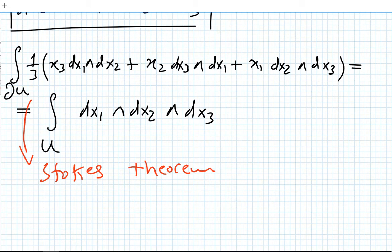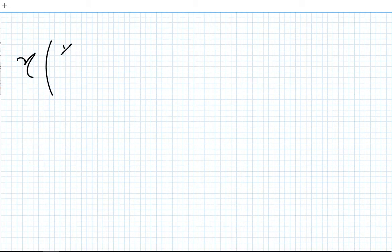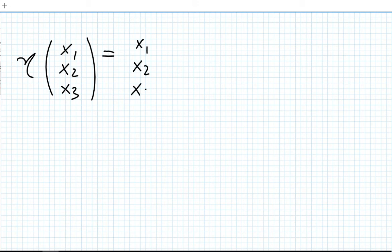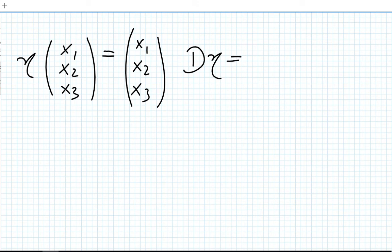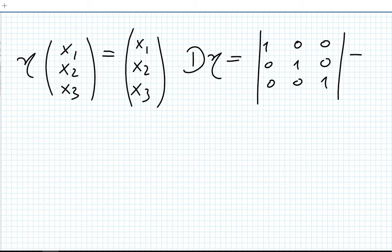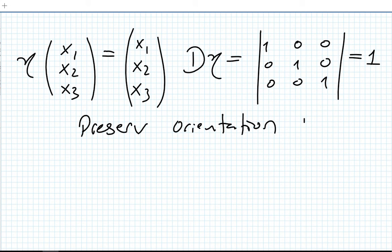We still have to check orientation. The parametrization is simply x₁ = x₁, x₂ = x₂, x₃ = x₃, so the Jacobian is the identity matrix with determinant 1, which is positive. So yes, it does preserve the right orientation — the sign is plus.